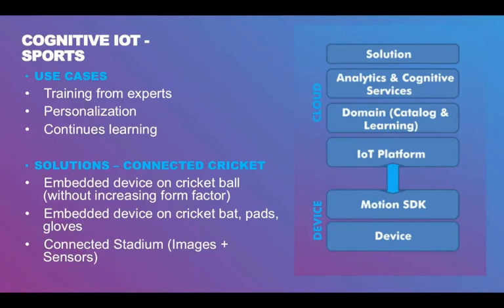From an architecture perspective, you have a low-powered device installed inside the ball or embedded as part of the design and manufacturing process. A motion SDK is installed on top of the device to identify any movement and communicate the readings back to the cloud. In the cloud we have the learning model and training data — we ask an expert batsman to play various strokes like cover drive and record their movements. This is used as training and test data, and comparisons are made against it using 3D models where machine learning approaches like dimension reduction can be employed.